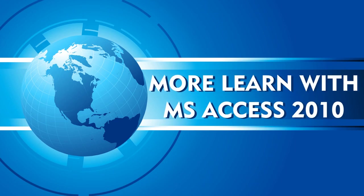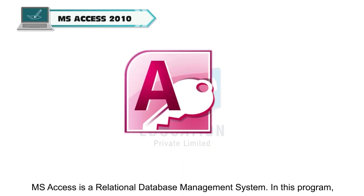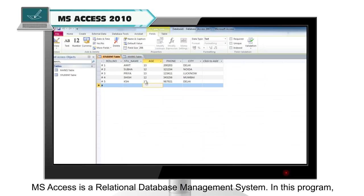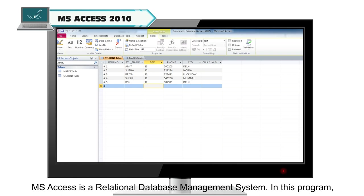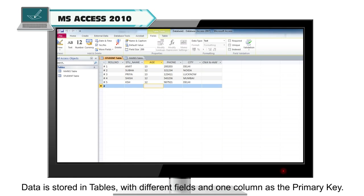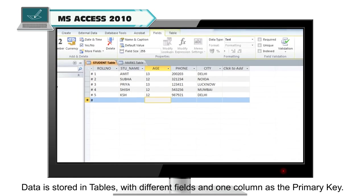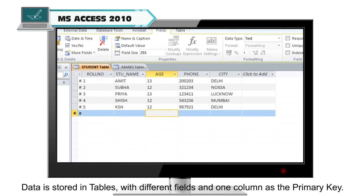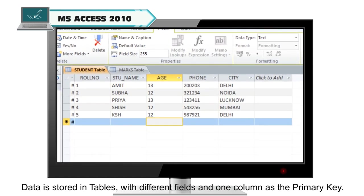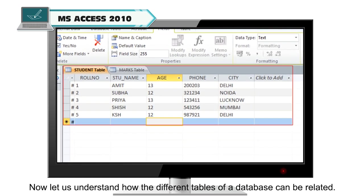MS Access is a relational database management system. In this program, data is stored in tables with different fields and one column as the primary key. Now, let us understand how the different tables of a database can be related.